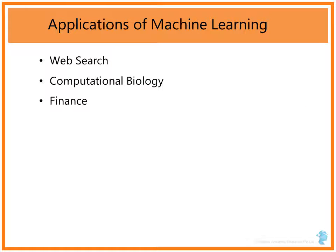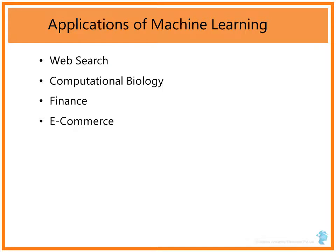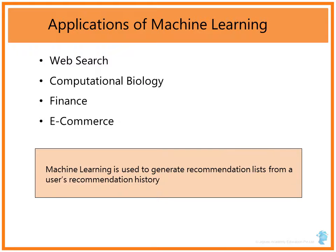Another aspect is Finance. Machine Learning is used to find out credit risk — when you apply for a credit card, it is very possible that a Machine Learning algorithm will be evaluating your application. Machine Learning can also help in determining which customers are most likely to churn from the credit card portfolio. E-Commerce is also another very big area of Machine Learning. If you go to any e-commerce portal, you can see certain products recommended for you — Machine Learning algorithms are used to build such recommendation engines.